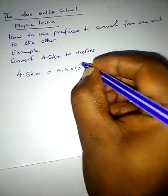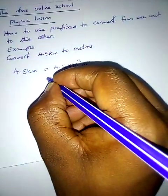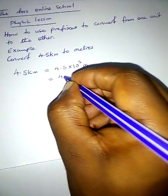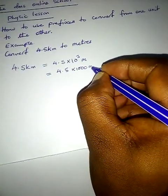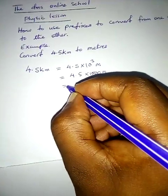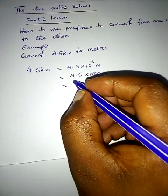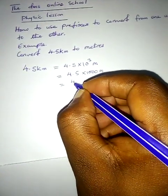10 to the power of 3, then you put meters. So this will be 4.5 times 1000, because 10 to the power of 3 is 1000. Then 4.5 times 1000 will give you 450.